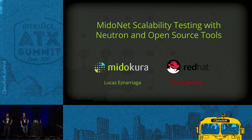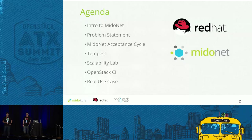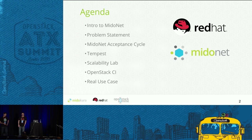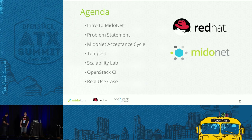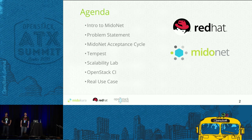So the agenda for today: we briefly introduce MioNet, what MioNet is, and the problem statement of scalability testing in SDN. Then we will show the MioNet acceptance cycle at Midokura. Then I will be speaking about Tempest a little bit — how does it work for the OpenStack CI, how does it interact with tools and every component. Then we're going to speak about how to scale it, and then a real use case we found using those tools.